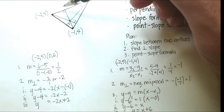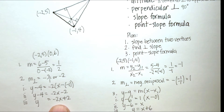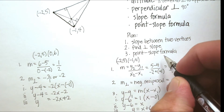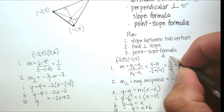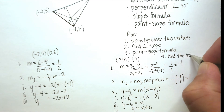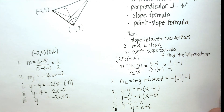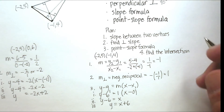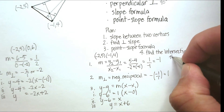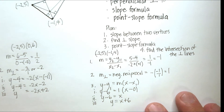Now I have the equations y = x + 6 and y = −2x + 2. Step four of our plan: find the intersection of these perpendicular lines. We set them equal to one another, because that gives us the common point that works in both equations.